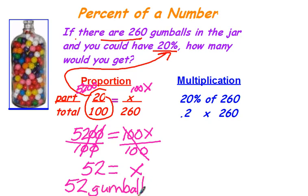Now the other way to work this problem is with multiplication. With proportions, we change 20% to a fraction. With multiplication, we're going to change it to a decimal.